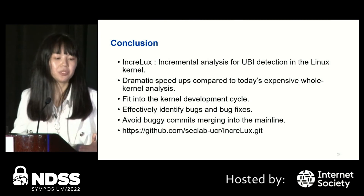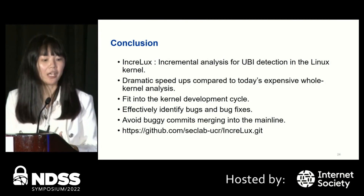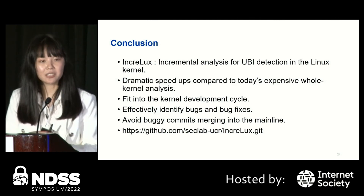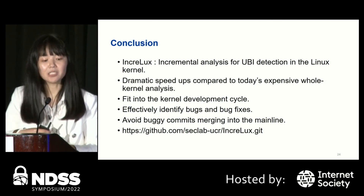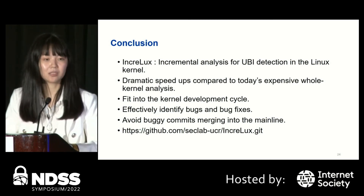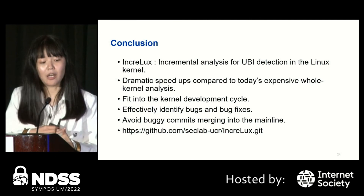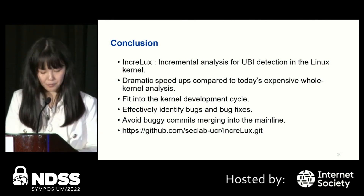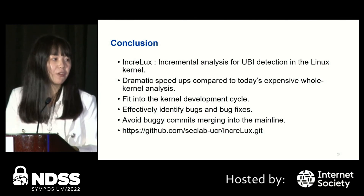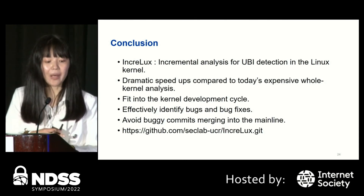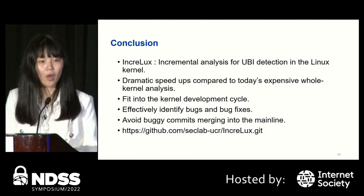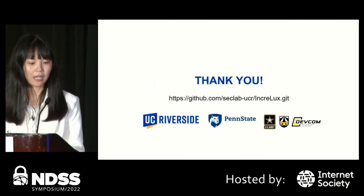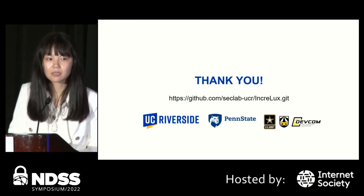In conclusion, we propose incremental analysis for use-before-initialization detection in the Linux kernel. Since we use taint-style analysis, we believe our approach can be extended to many more taint-style bugs. It dramatically speeds up analysis time compared to expensive whole-kernel analysis, fitting it into the kernel development cycle. It can effectively identify bugs and bug fixes, helping to avoid buggy commits merging into the mainline. The tool is open-sourced on GitHub — welcome to check and contribute. Thank you for attending the talk, and I'm happy to take questions.